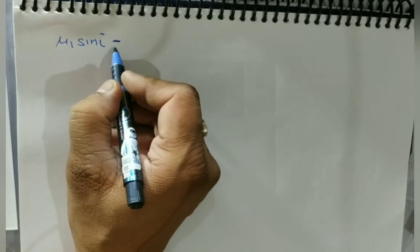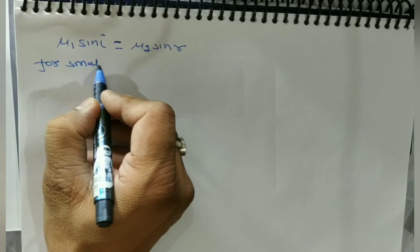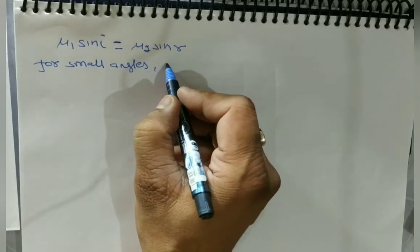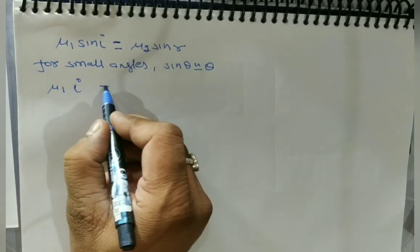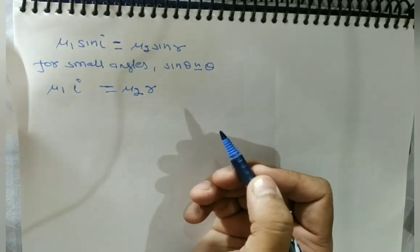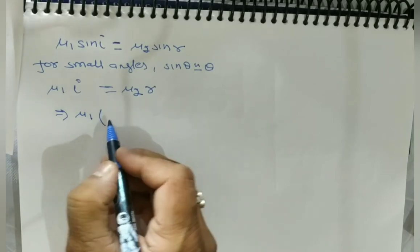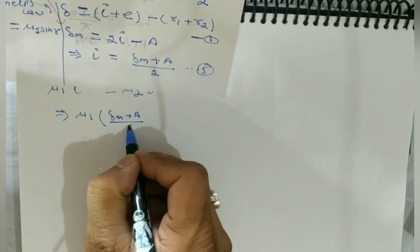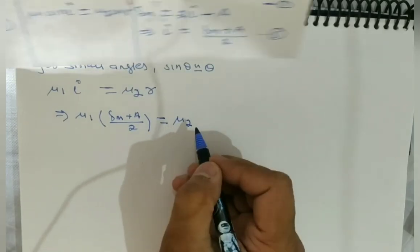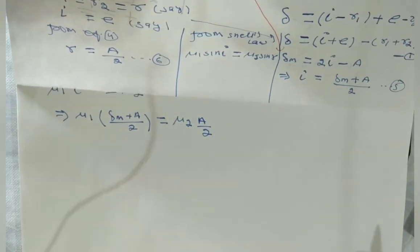Here we have μ1 sin i equals μ2 sin r. For small angles, we know that sin θ can be written as θ itself, so μ1 times i equals μ2 times r. Substituting i equals (δm plus A) divided by 2 from equation 5, we get μ1 times (δm plus A)/2 equals μ2 times r, and r equals A/2 from equation 6.